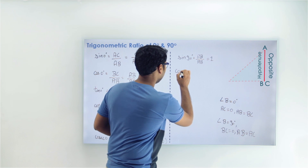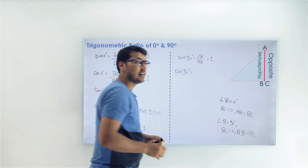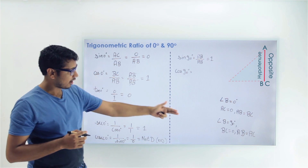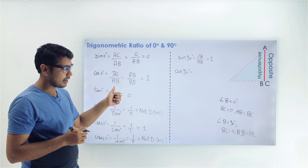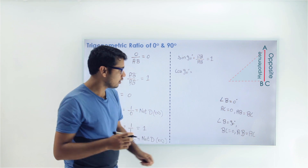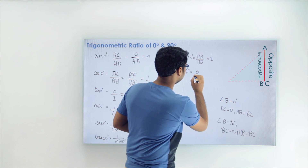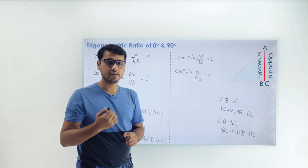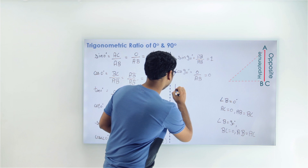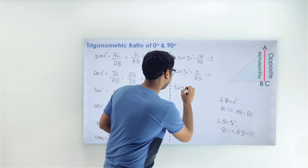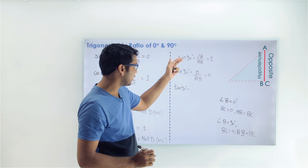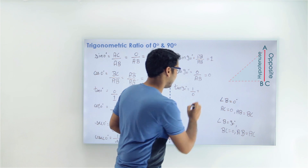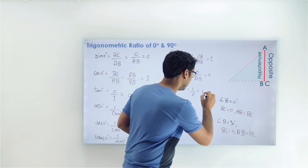For cos of 90°, it is adjacent upon hypotenuse. The adjacent was BC and its value is 0, while AB remains AB. So this is 0 upon AB, and hence cos 90° = 0. Similarly for tan 90°, dividing sin 90° by cos 90° gives 1 by 0, which is infinity or not defined.